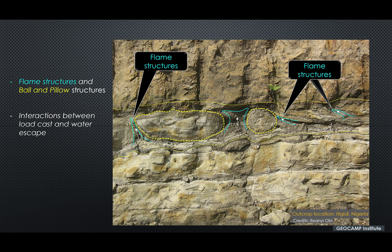Take a look at this outcrop section. What we see are two key types of soft sediment deformation: the flame structures outlined in cyan, and the load/ball-and-pillow structures outlined in yellow in the middle. In this case, the load structures act as excess load to the surrounding mudrock, and as a result, the water content of the mudrock finds its way up and out, creating these flame-shaped features which we call flame structures.